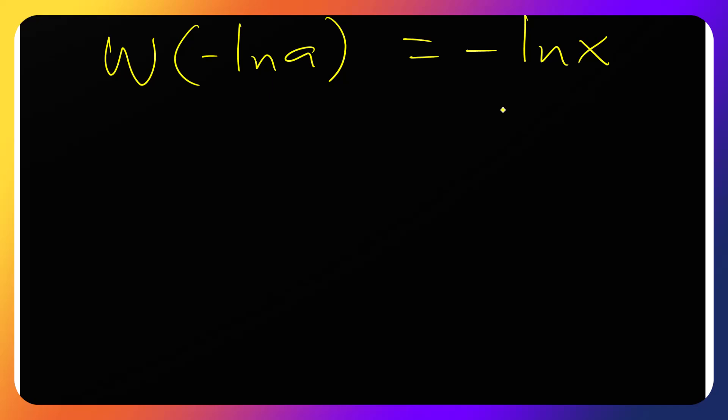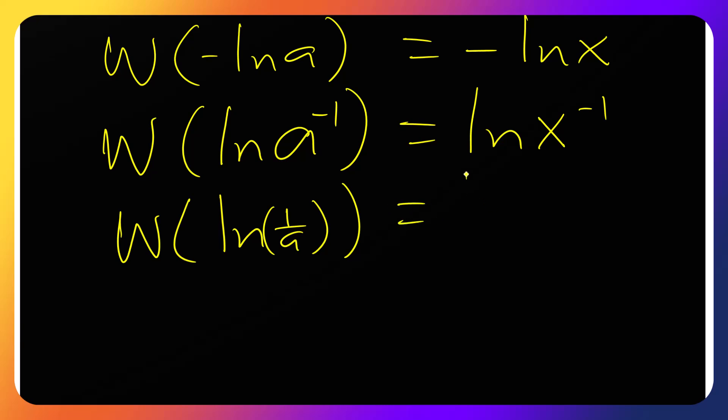Okay, so let's manipulate this. Remember this minus one is a power, really same as ln of, so this one will go, so e to the power minus one and this one also go, x to the power minus one. So I'll get ln of one over a equals ln of one over x.